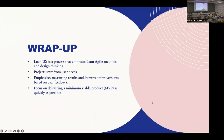To wrap up: Lean UX is a process that embraces lean agile methods and design thinking. Because projects start from understanding users' needs, Lean UX emphasizes measuring results and making iterative improvements based on user feedback, and this can be done by delivering the MVP as quickly as possible. Thank you for joining us — we'll take any questions you may have.